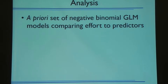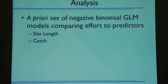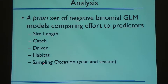I used an a priori set of GLM models and AIC to compare which model fits best and is most parsimonious. The factors I used were: site length — included in every model because shoreline length best predicts survey time; catch — number of fish; driver — to check whether our standardization is off; habitat — sandy bottom versus rock and wood; and sampling occasion — which is somewhat co-linear with catch, but included to see the strongest predictors.